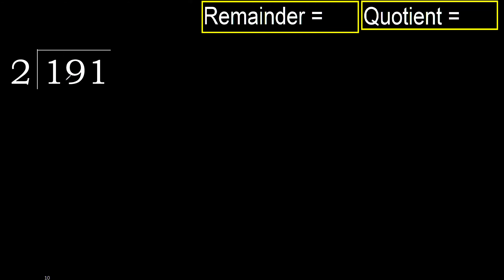191 divided by 2. 1 is less, therefore next. 19 is not less, therefore with 19.